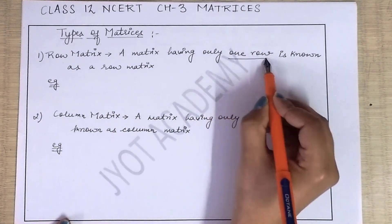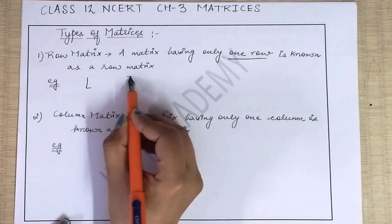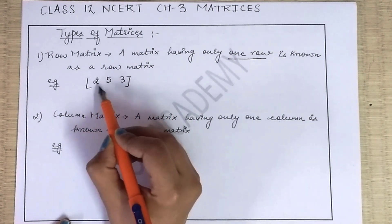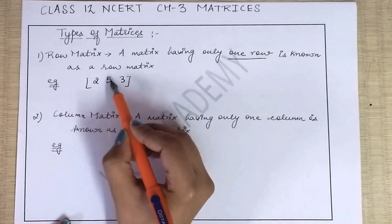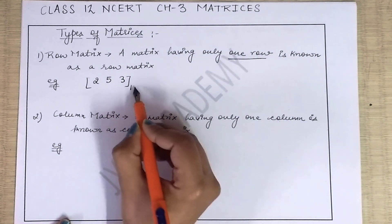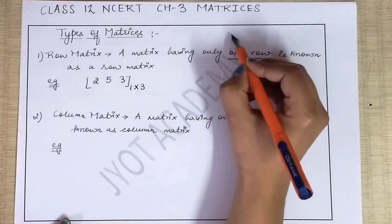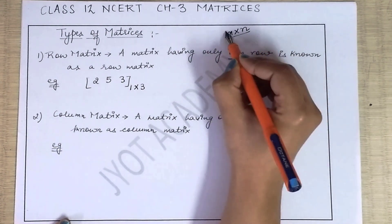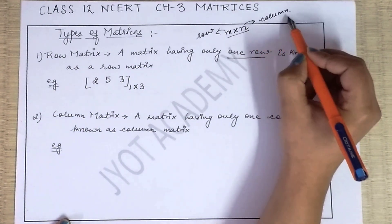A row matrix is a matrix with only one row. For example, here I have written [2, 5, 3]. So clearly row is one, and if I look at columns: one, two, three — three columns. That means the order is 1×3. Aapka jo order hota hai matrix ka, wo hota hai m×n — m se matlab mera row aur n se matlab mera column.